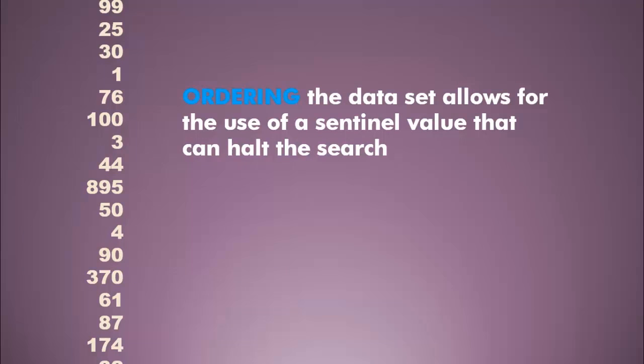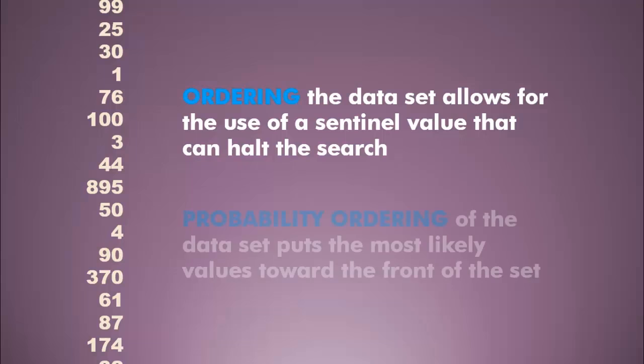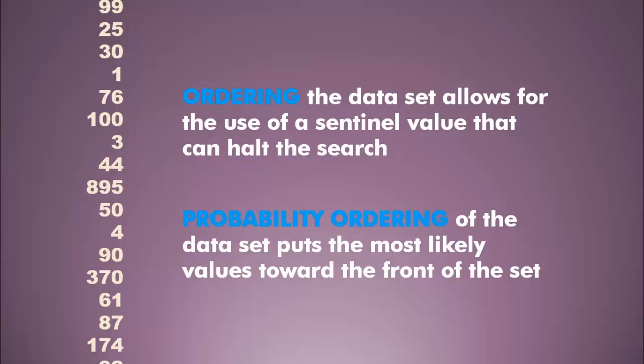There are a couple of things we can do to improve the efficiency of a linear search. We could order the list, and that way, if we get midway through the list and find that the numbers we're looking at are greater than the number we're searching for, we know that the number is not going to be in the list. We could also do something called probability ordering, which is taking those items that are most likely to be searched for and putting them at the front of the data set. Your computer does that with your file structure.